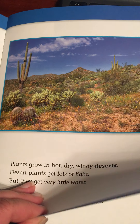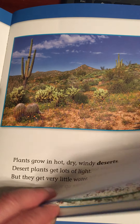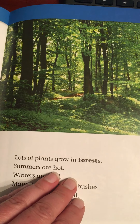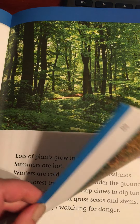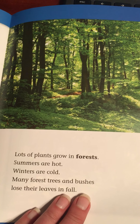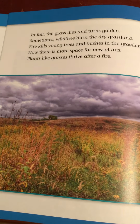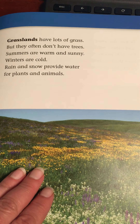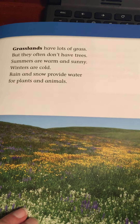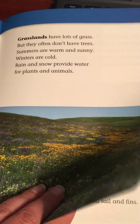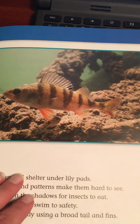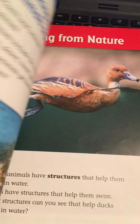A habitat that has many trees and bushes, where chipmunks live, is called a forest. A habitat that has open space and grass is called a grassland. A habitat that is a large place filled with water, where frogs and fish live, is called a pond. A habitat that is saltwater, where fish live, is called an ocean.